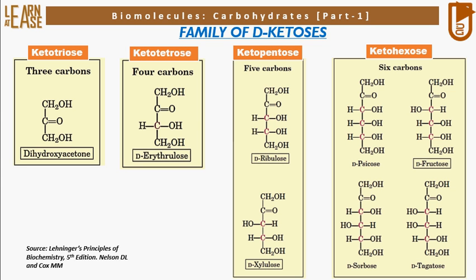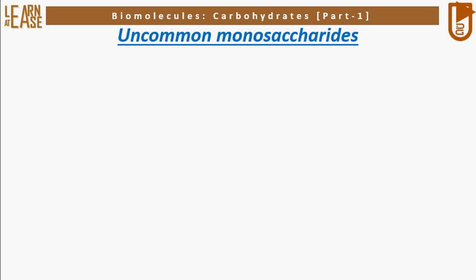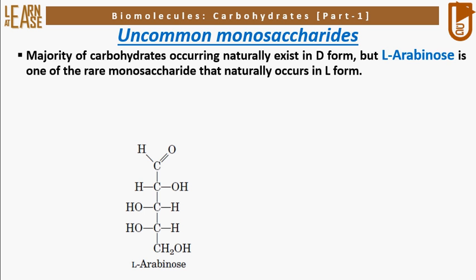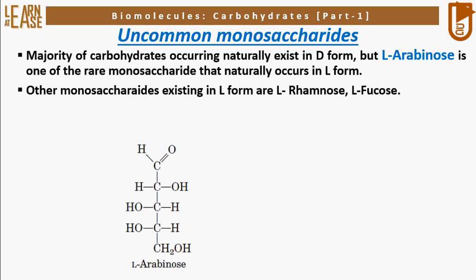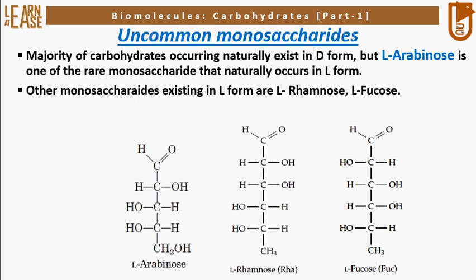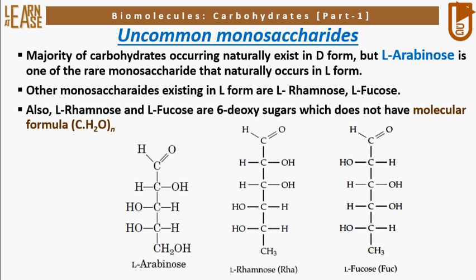Now let me describe some uncommon monosaccharides. Majority of carbohydrates occurring naturally exist in D-form, but L-arabinose is one of the rare monosaccharides that naturally occurs in L-form. Other monosaccharides existing in L-form are L-rhamnose and L-fucose. Also, L-rhamnose and L-fucose are six-deoxy sugars which do not have the molecular formula C(H2O)n.